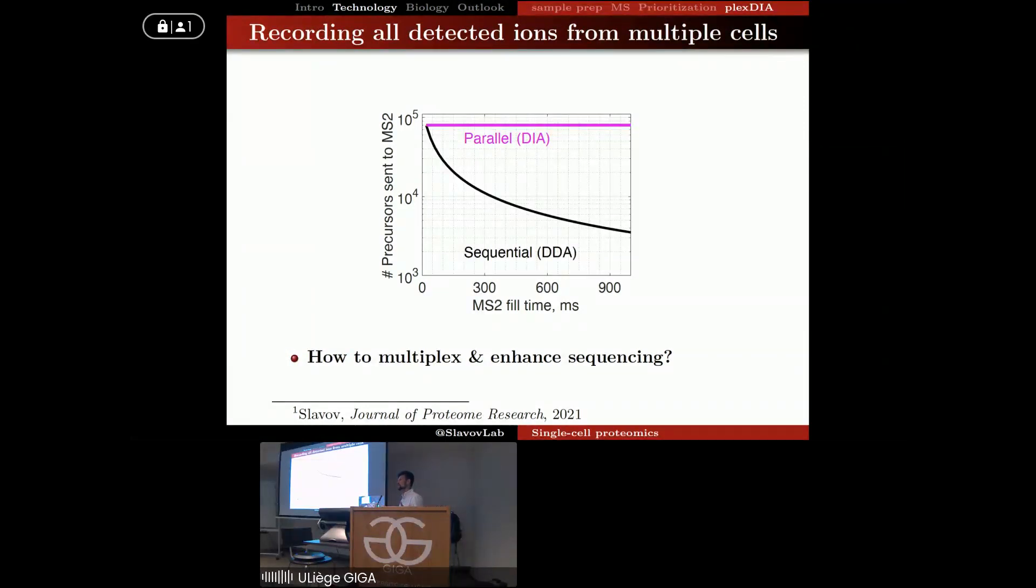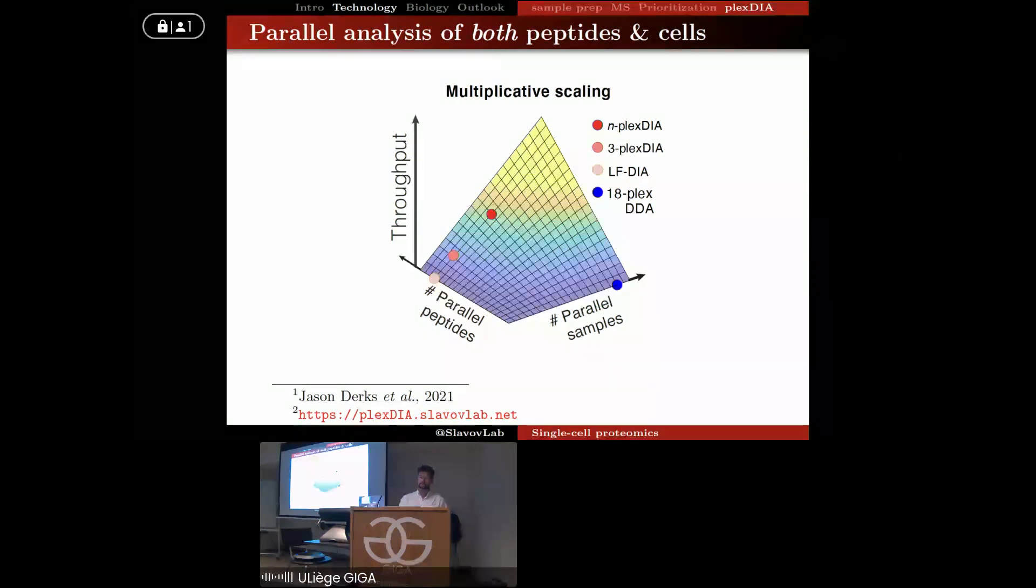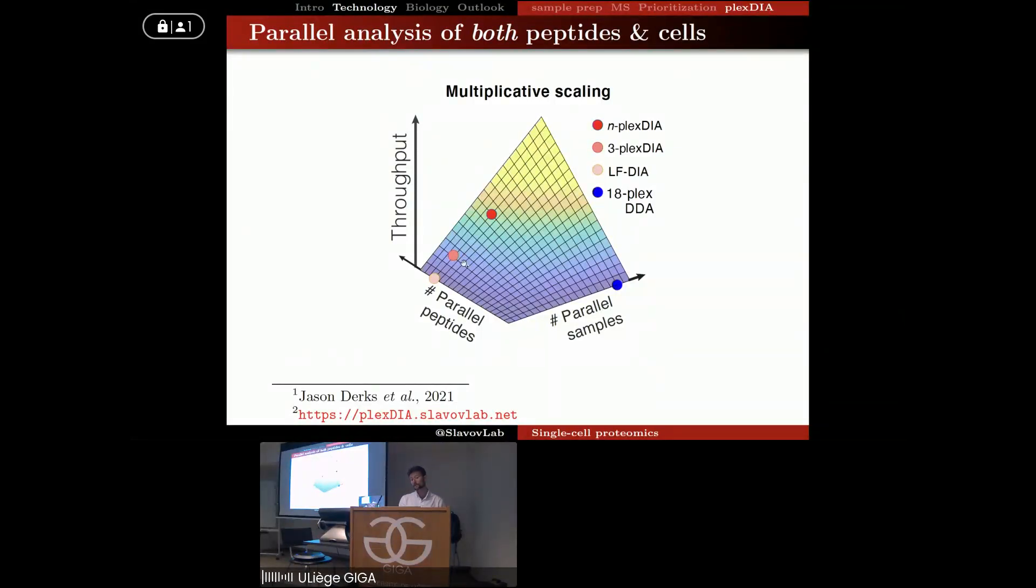You can naturally ask me, so why would anybody isolate only one peptide at a time to begin with? Well, because the data is simple to interpret. Once you start isolating hundreds and thousands, these data become complex and there are challenges with interpretation. So essentially, our idea here, the concept that we wanted to test, is that we can simultaneously analyze in parallel many peptides and many samples, and this can give us a multiplicative scale. And I'm going to show you a proof of concept for doing this with three labels.